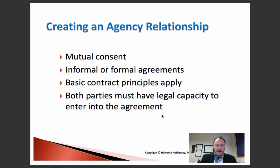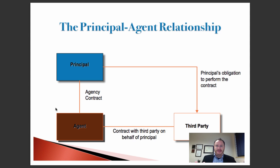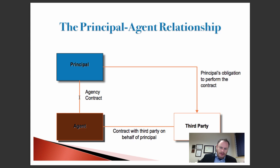In the contract, the player authorizes the agent to represent, advise, consult, and assist the player in negotiation, execution, and enforcement of his playing contract in the National Football League. The contract lays out duties, responsibilities, and the compensation aspect. Once a relationship has been created by contract between the principal and the agent, the principal is empowering the agent to act as its fiduciary, and the agent will represent the interests of the principal and contact third parties on behalf of the principal.